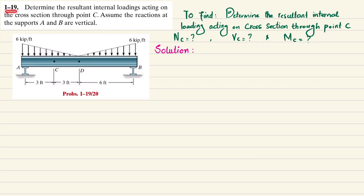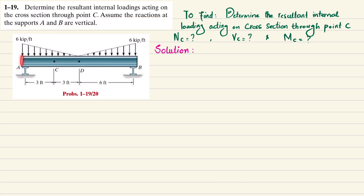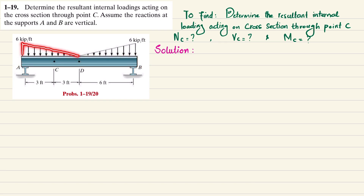Welcome back. Problem 1-19. The statement is: determine the resultant internal loading acting on the cross section through point C. Assume the reaction at supports A and B are vertical. This is a simply supported beam acted upon by two supports at points A and B, with a uniformly decreasing load from A to D and a uniformly increasing load from D to B. We have to find the internal loading at point C.